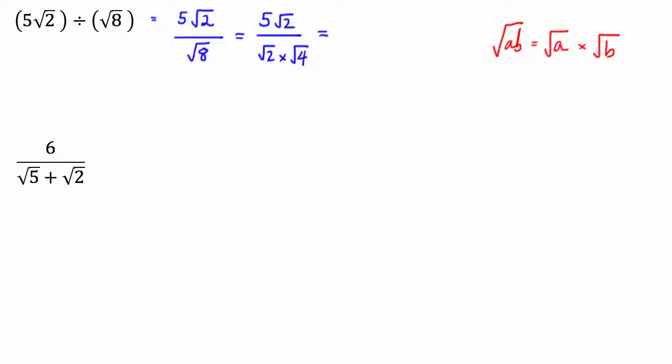Now what we can do from here is we can see that there's a square root of 2 on the top, numerator, and a square root of 2 in the denominator. So these will just cancel out. And I'm left with 5 over square root of 4. Now I can't leave it like that. We can't leave a surd in the denominator. We need to rationalize this.